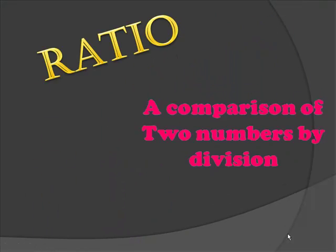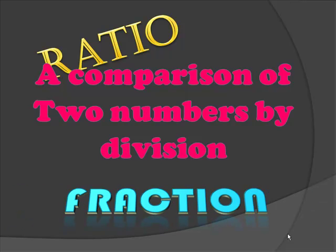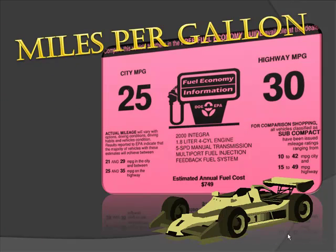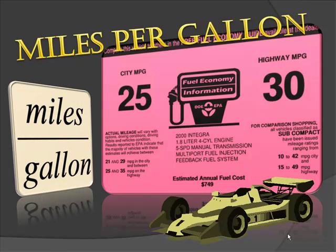A ratio is a comparison of two numbers by division. Another name for ratio is a fraction. An example of ratios in the real world are the number of miles that your car gets per gallon. If I rewrite the words miles per gallon as a fraction, I would write it miles over gallon.